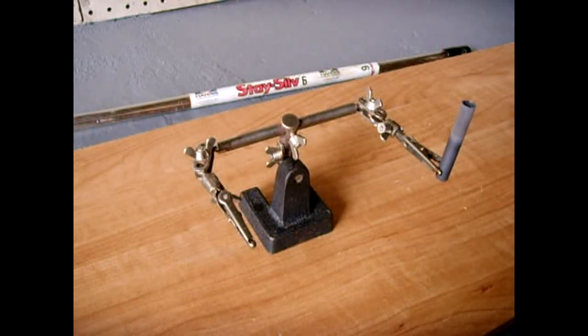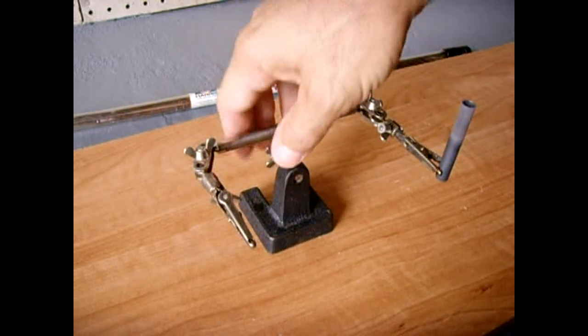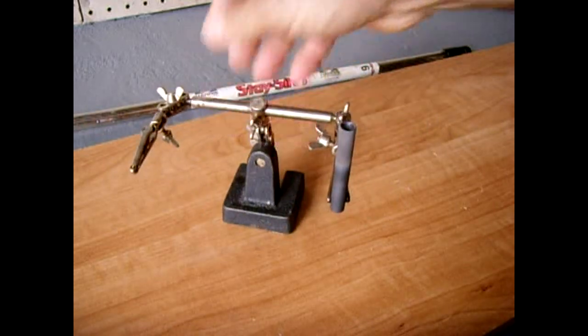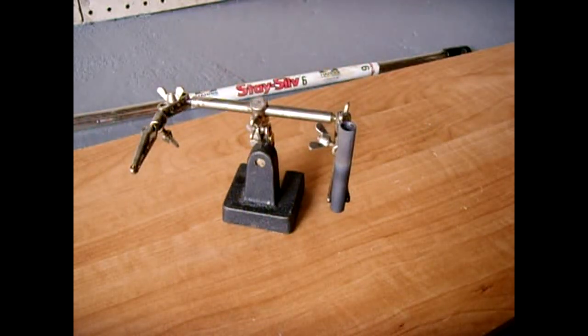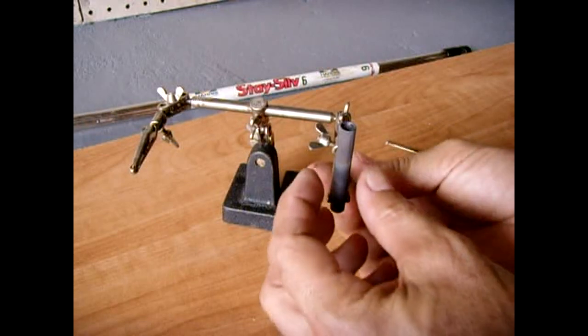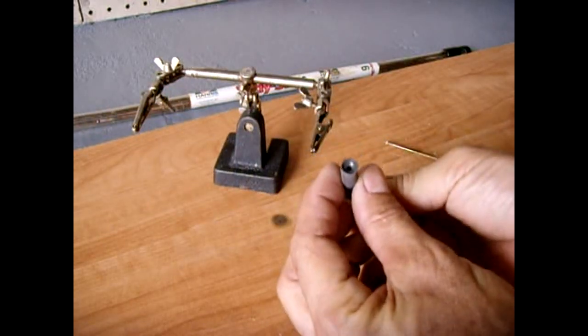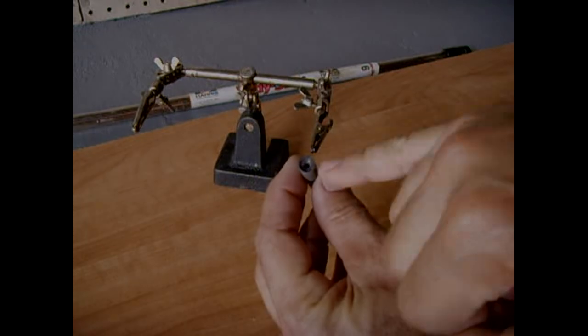Instead of using the crucible, I came up with this. I took a carbon rod out of a heavy-duty D-sized cell battery, a carbon zinc battery, and after I took it out I drilled a cavity inside right here.